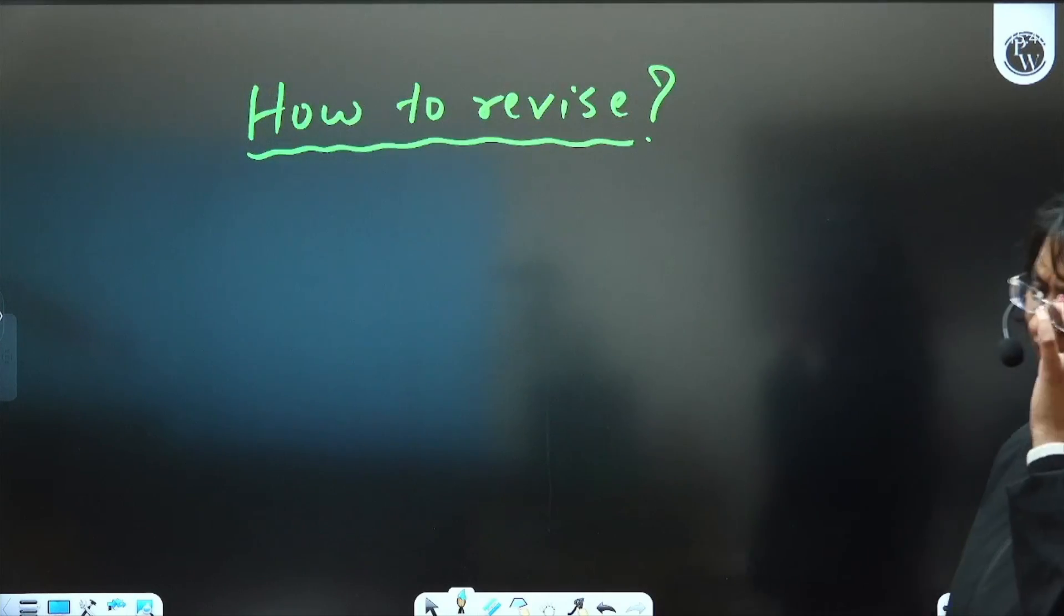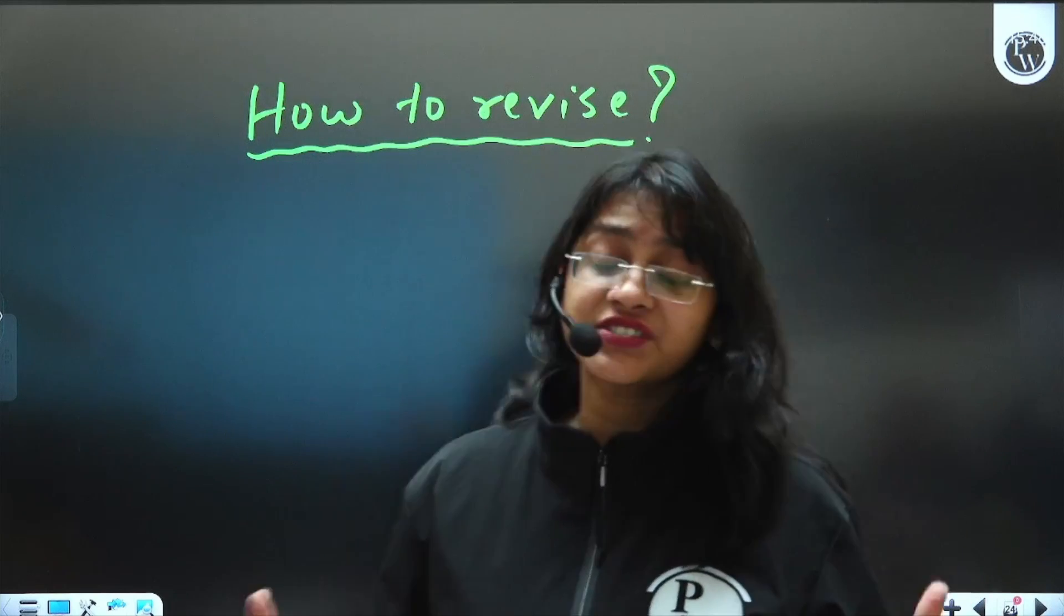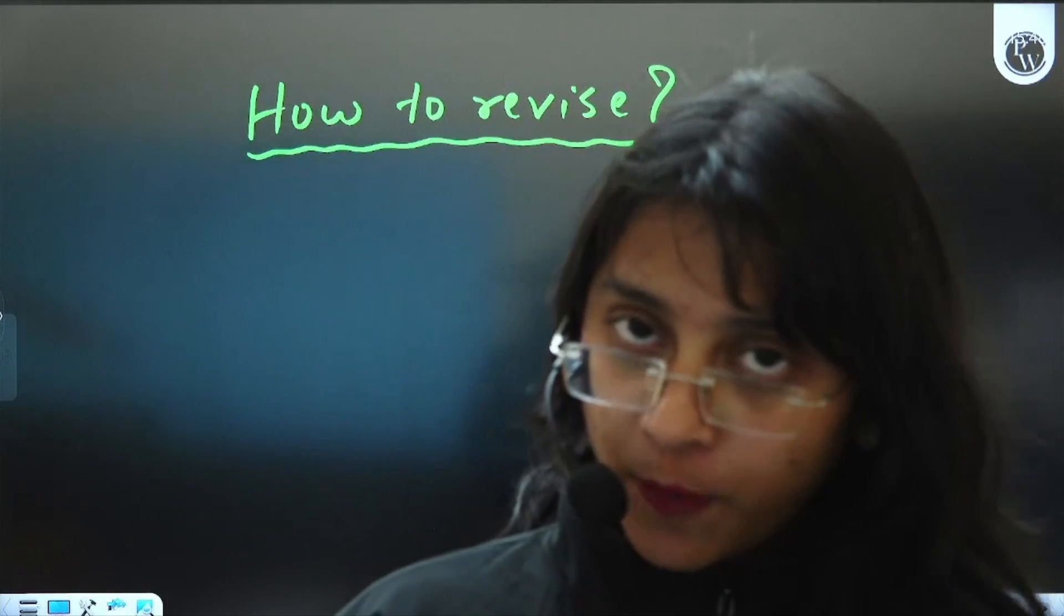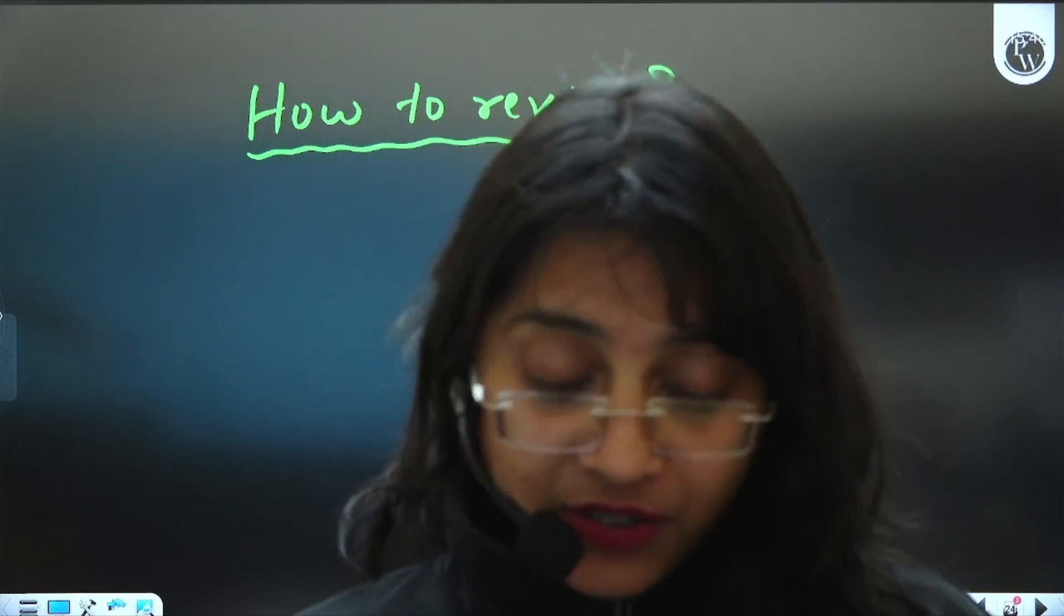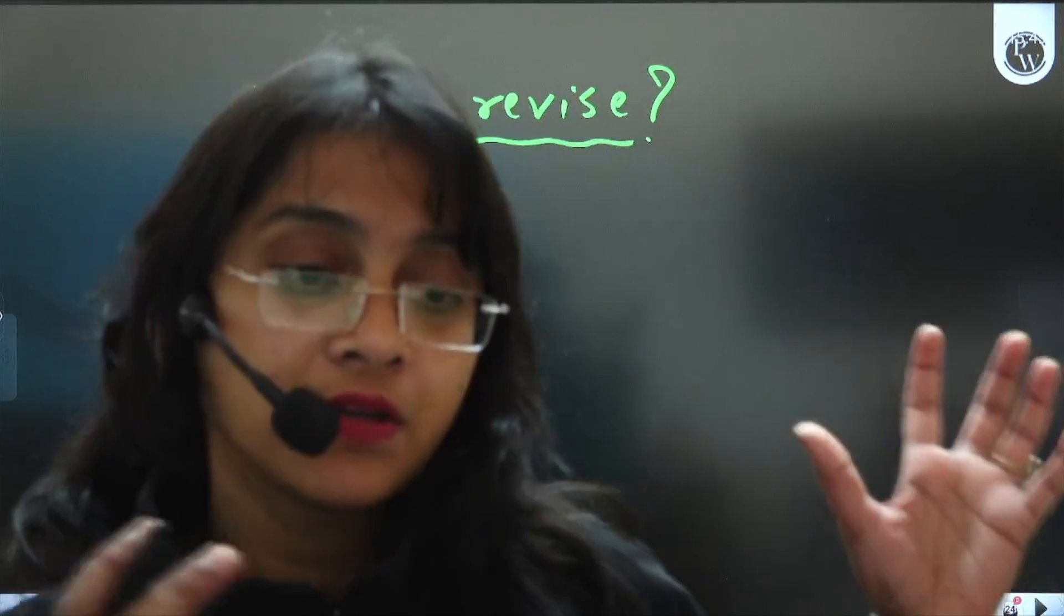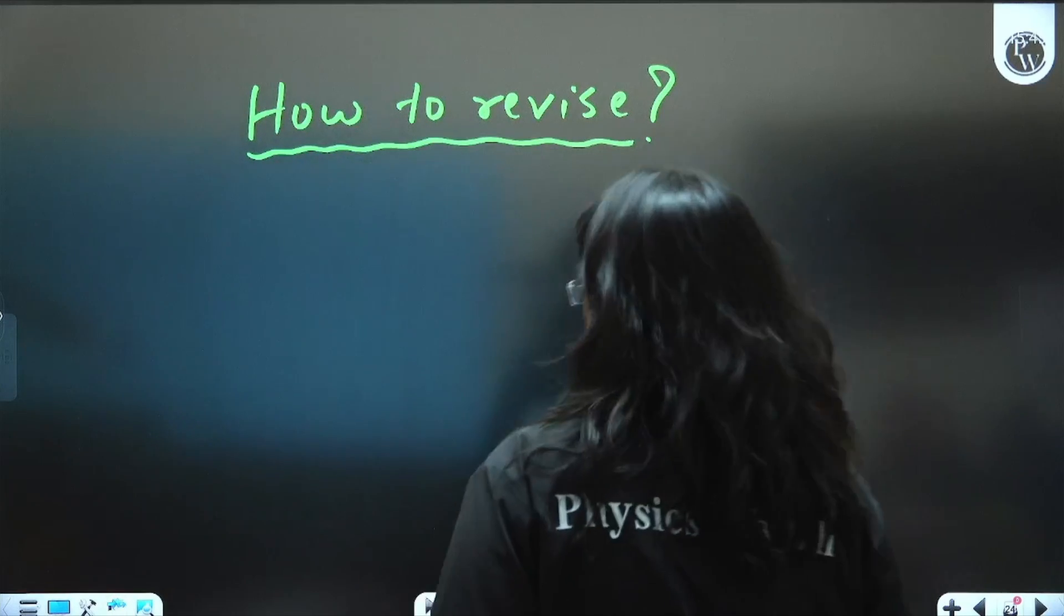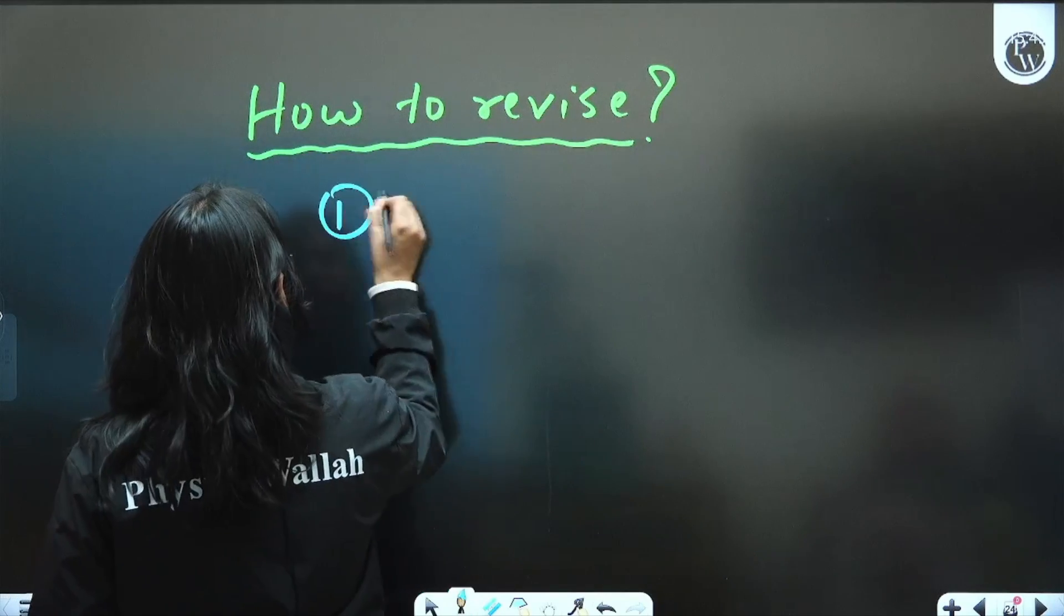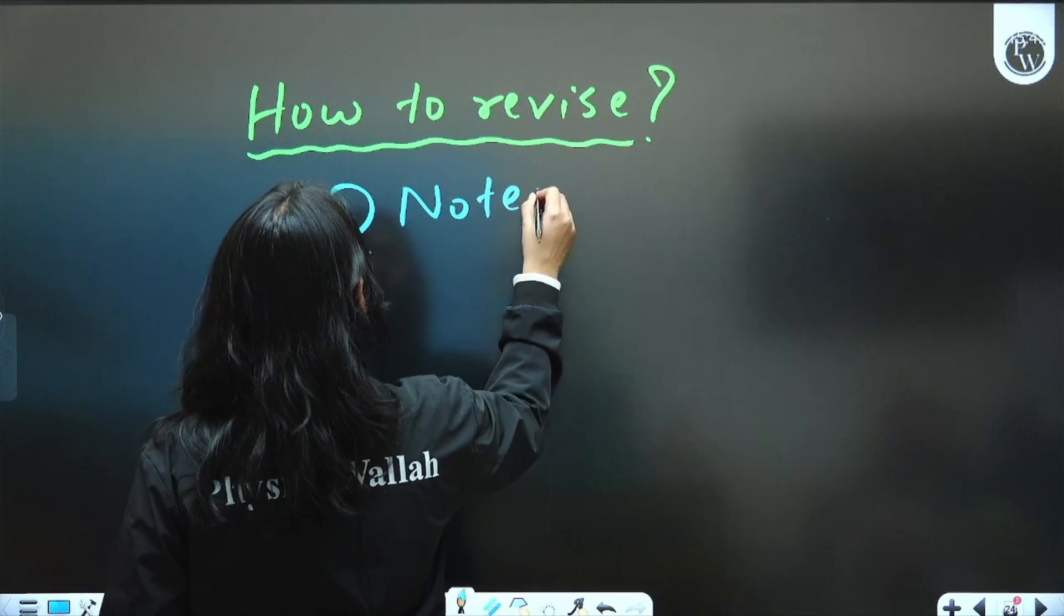And many of you would be finding it difficult to revise 3-4 chapters in a day because your speed might not be good, speed of studying, or accuracy might not be good. So if that's the case, which is the source? How exactly can you revise? One source of revision is your notes. You would be having your own notes, flowcharts for revision.